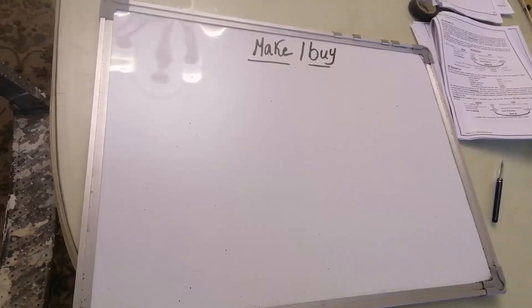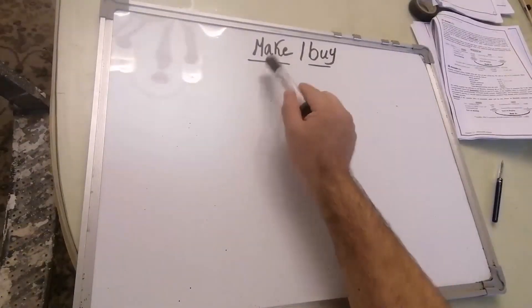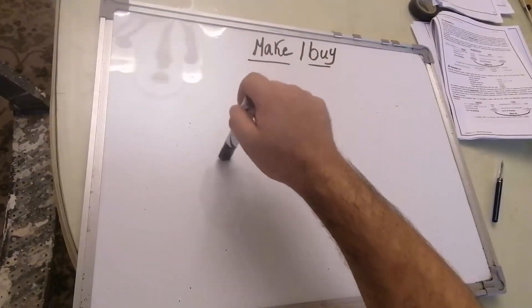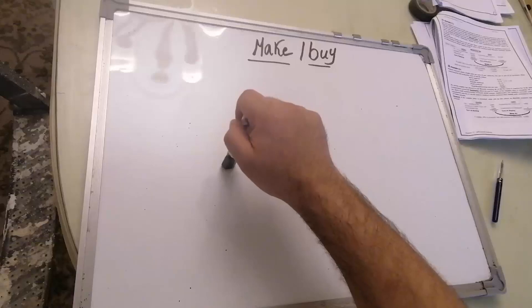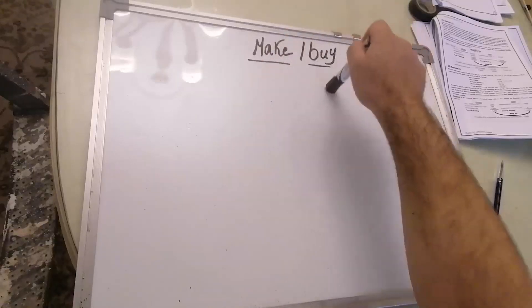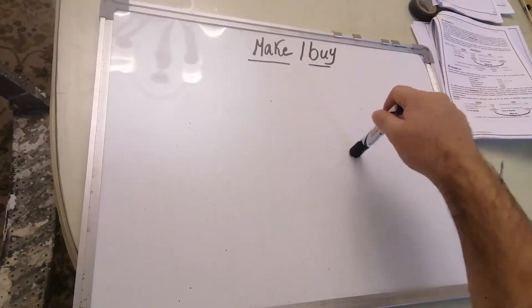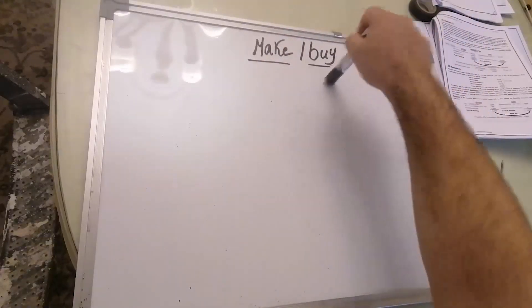The decision is to make or buy. Make — I'll do something on my own. Or outsource — I'll do something through a third party.